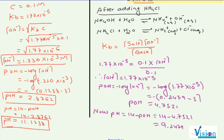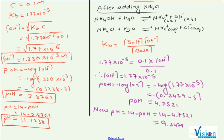So therefore change in pH. Before adding, pH will decrease when you add common ion salt. 11.1238 we had earlier minus 9.2479, what's the change? 1.859.